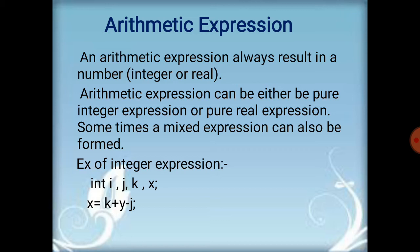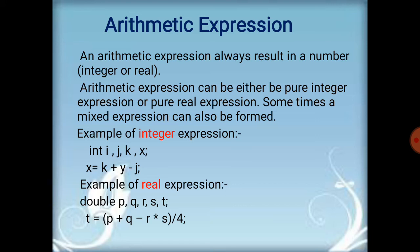Example of an integer expression: here, I have taken int i, j, k, x — all of type integer. So the expression x = k + i - j is a pure integer expression. Example of a pure real expression: double p, q, r, s, t — here the variables p, q, r, s, t are of type double. So t = p + q - r * s / 4 is a pure real expression because the result is a decimal or real number. So the arithmetic expression can be real, integer, or sometimes a mixed expression.